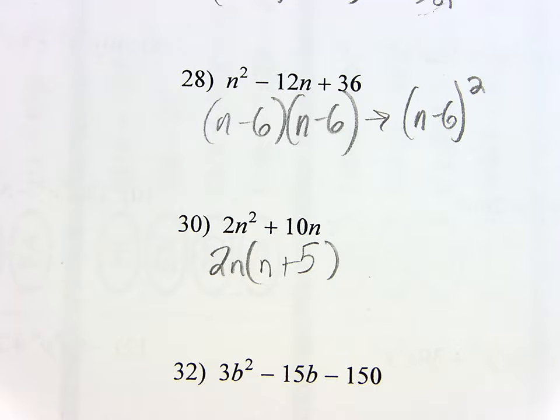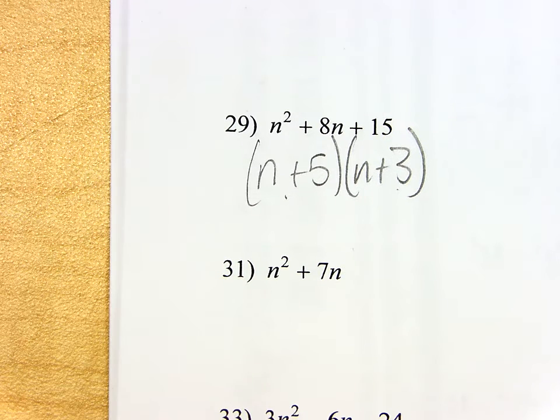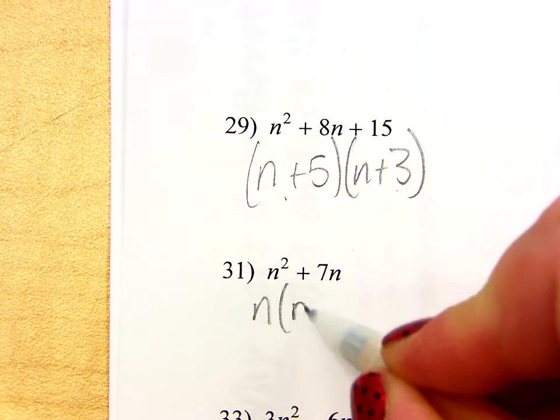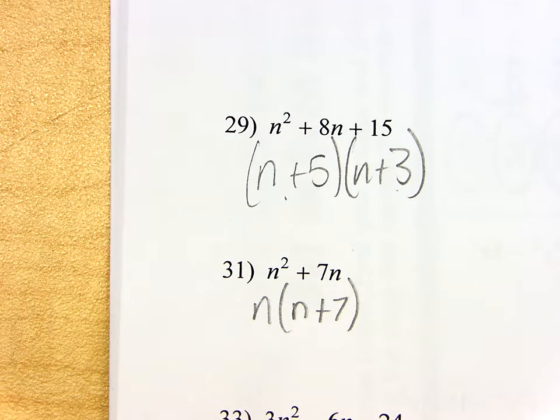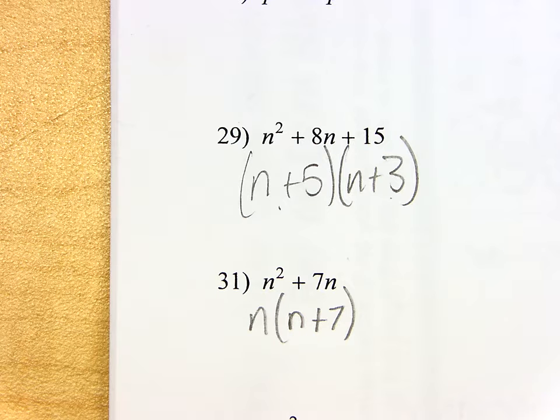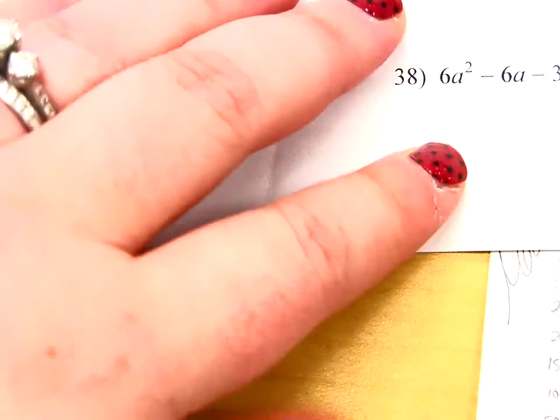Try 31. What can you take out? Just an N. And you're left with N plus 7. We will eventually be doing ones where we combine both of these, like number 38, for example.